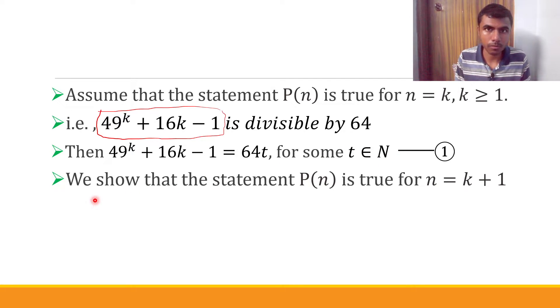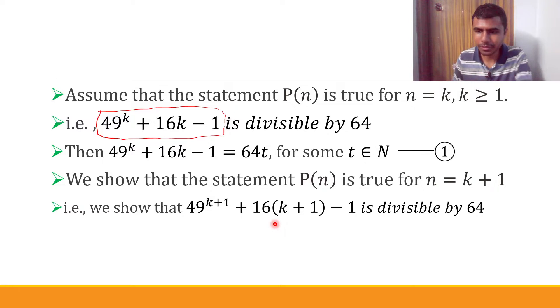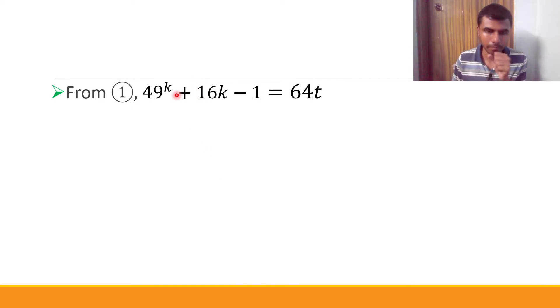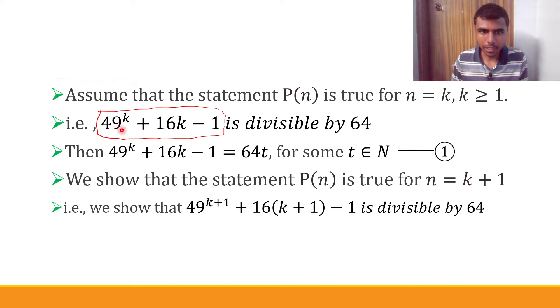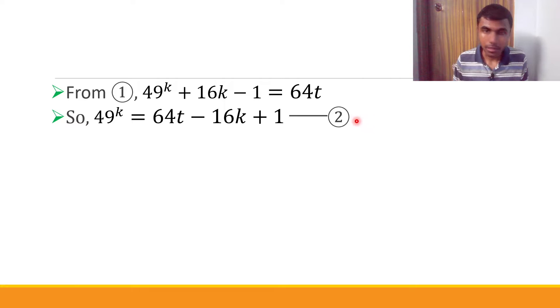Now we have to show that the statement is true for n equal to k plus 1. In the same statement, put n equal to k plus 1 — we have to show that 49^(k+1) + 16(k+1) - 1 is divisible by 64. From equation (1), send 16k - 1 to the RHS to get 49^k = 64t - 16k + 1. Mark this as equation (2) for later use.